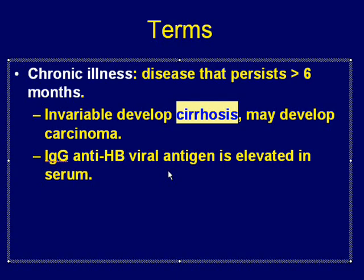Now, regarding the serological findings in chronic illness: in chronic hepatitis, at that particular moment you may not detect the antigen in the serum. However, since the patient's immune system has been activated, despite the absence of antigen, you will get IgG antibody, which suggests chronic illness.